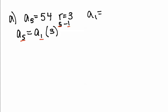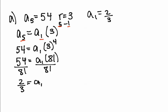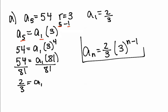Swap out A5 for 54. We have 3 to the 4th because of 5 minus 1. Solving for A1: 3 to the 4th is 81, so divide both sides by 81. Simplifying that fraction gives us A1 equals 2/3. Now that our first term is 2/3 and our ratio is 3, we can write our rule: A sub n equals 2/3 times 3 to the n minus 1.